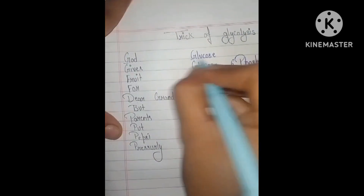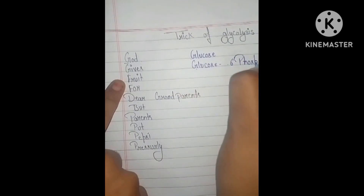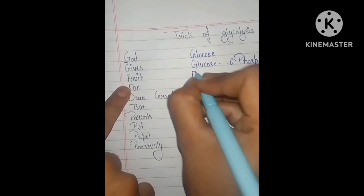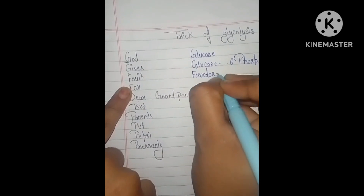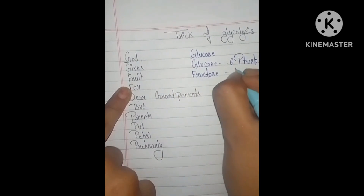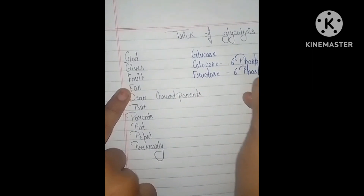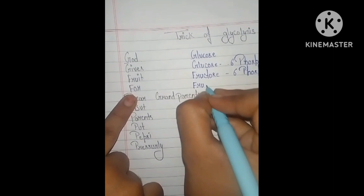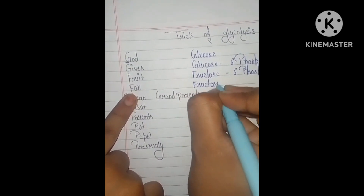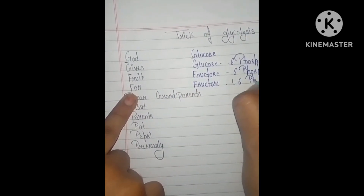Glucose is converted to Glucose 6-phosphate, then to Fructose 6-phosphate, and then to Fructose 1,6-bisphosphate.